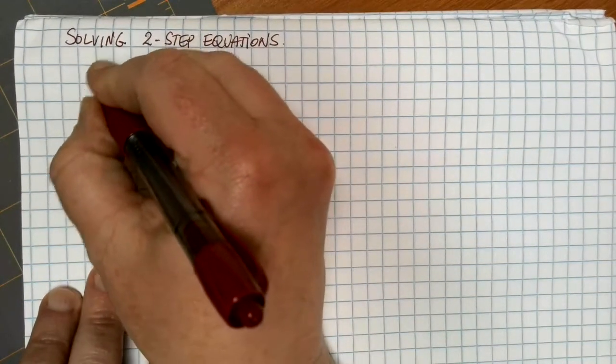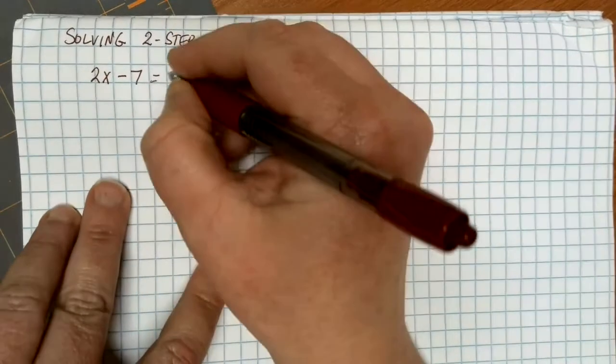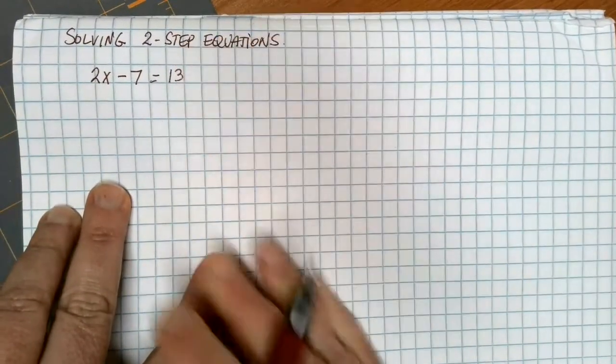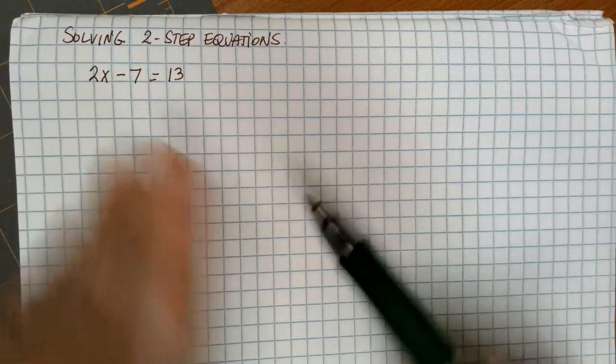Let's suppose that we have an equation that looks like this. 2x minus 7 is equal to 13.